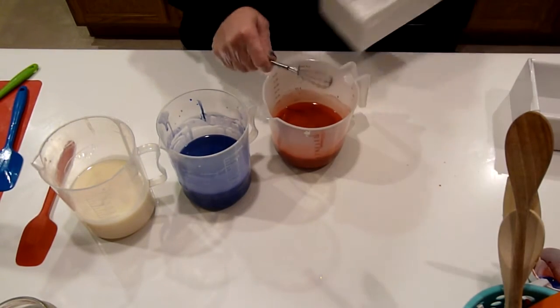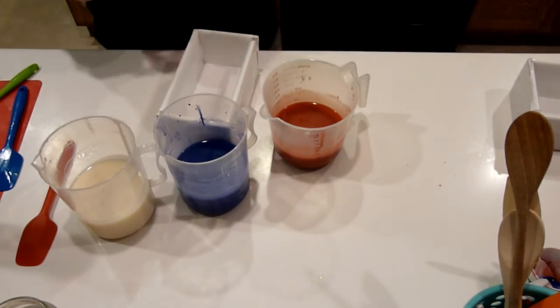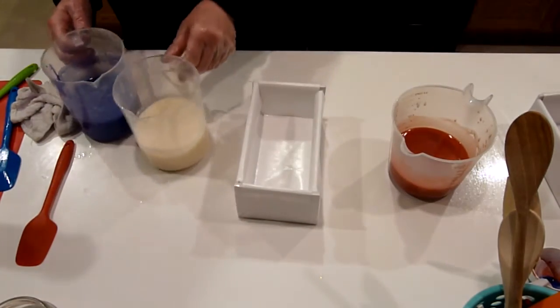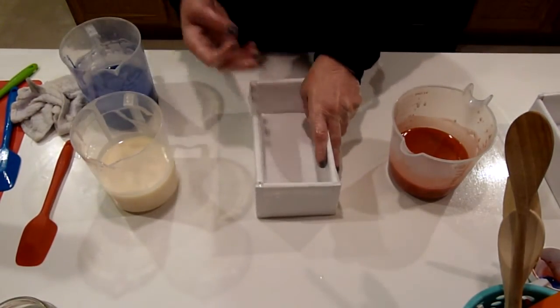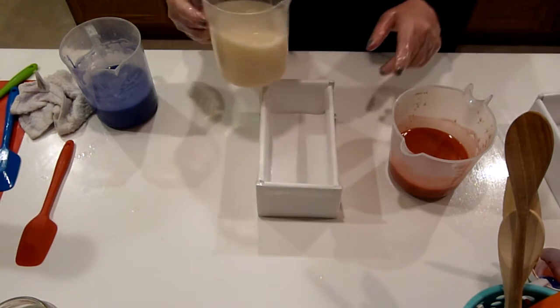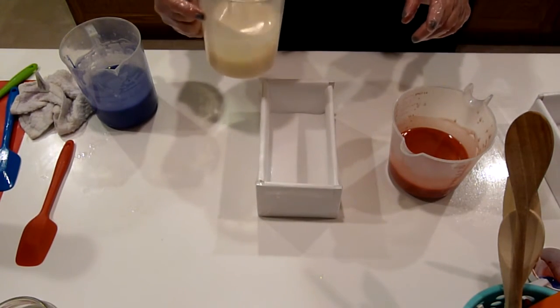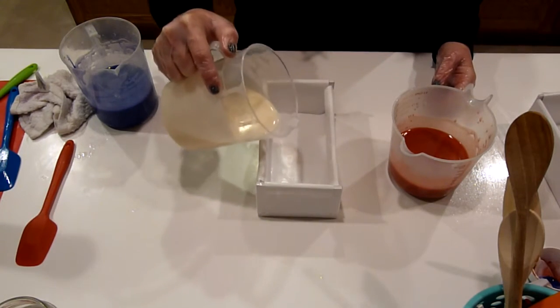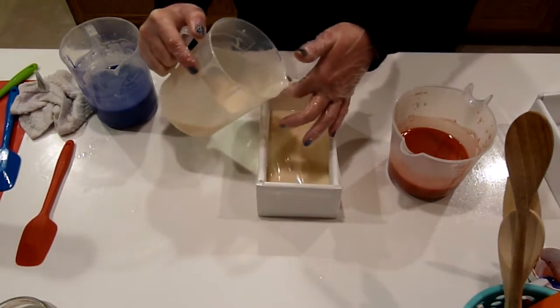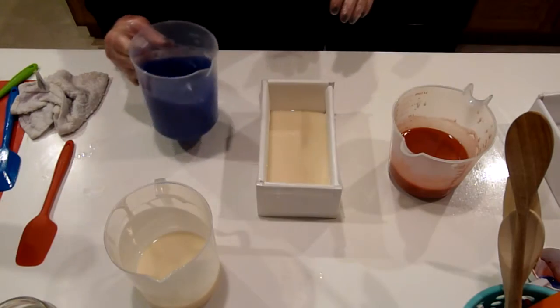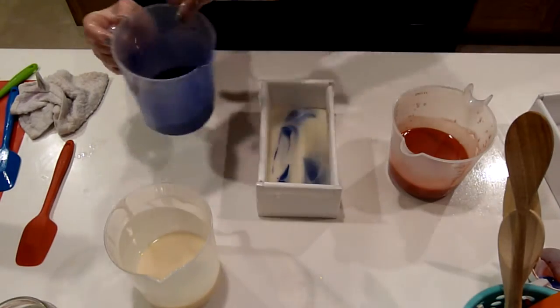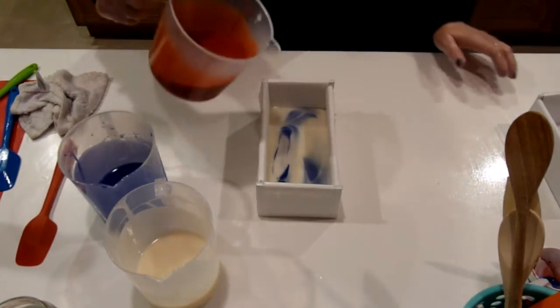All right. I am going to use this mold right here. And I actually hadn't decided what I was going to do. I think I may just do a drop swirl. And what I'm going to do is put a little bit of the white in, and then drop a little of my blue and drop a little of my red.